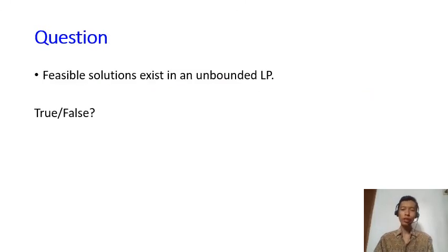So here's a question to check your understanding on unbounded linear programming. I will give you the answer after the pause of the video. So the question is: feasible solution exists in an unbounded LP. Is it true or false?